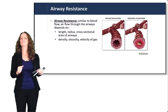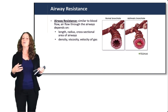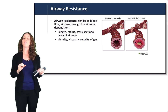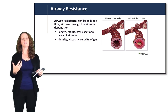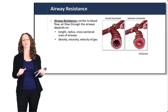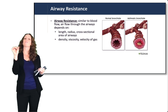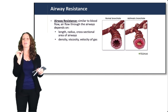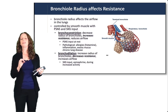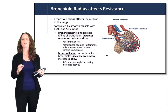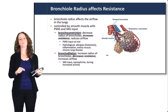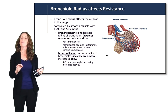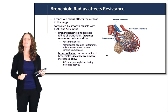Airflow through the airways depends on the tube's length, radius, and cross-sectional area, as well as the density, viscosity, and velocity of the gas moving through. As airways narrow, just like blood vessels narrowing, resistance increases and it becomes more difficult for air to pass through. The radius of the bronchioles is the most important contributor to airway resistance. This is controlled by smooth muscle with both parasympathetic and sympathetic nervous system input. Constriction of the bronchioles decreases their radius, increases resistance, and reduces airflow.